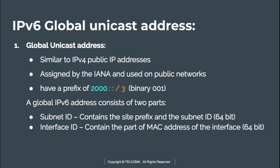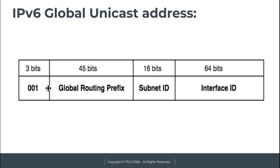Global unicast addresses are divided into two parts: the subnet ID and the interface ID. The subnet ID contains the site prefix as well as the subnet ID, together making a 64-bit field. The interface ID contains part of the MAC address of the interface or device, also constituting 64 bits. The packet format starts with 3 bits (001), followed by 45 bits for the global routing prefix, 16 bits for subnet ID, and 64 bits for the interface ID.